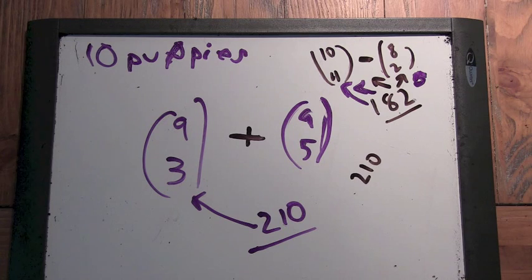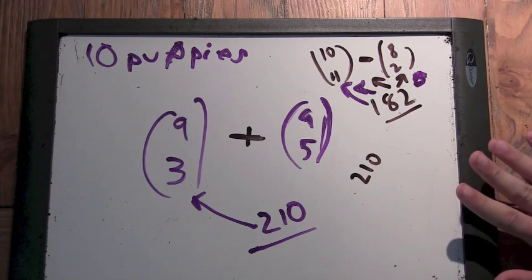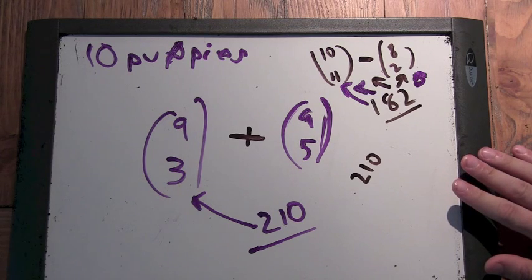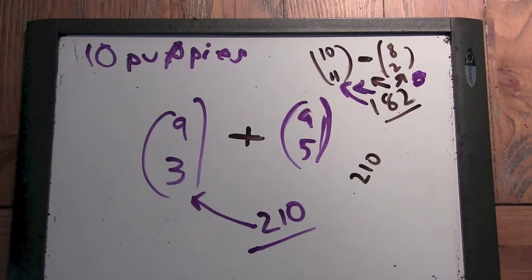If both of these ways were right, you have to get the same answer. And we didn't get the same answer. So one or both of them is wrong.